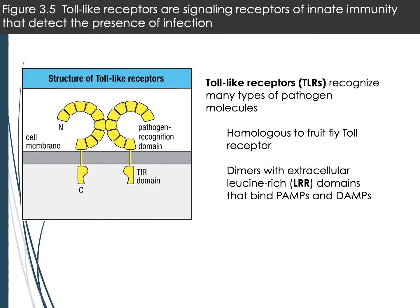The basic structure of a toll-like receptor is that it forms a dimer with two chains. It has a leucine-rich repeat domain — called the pathogen recognition domain — which is the portion that binds the pathogen. The receptor also has a TIR domain that is critical for cell signaling events.